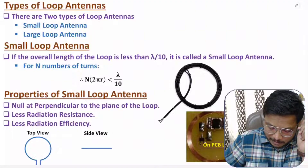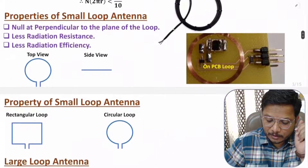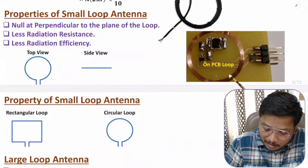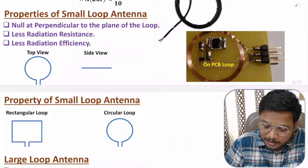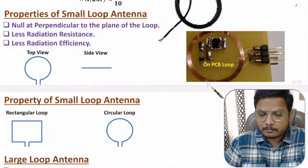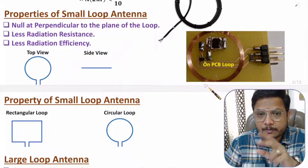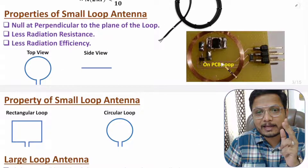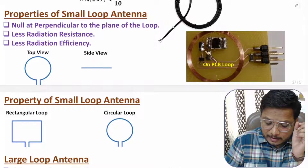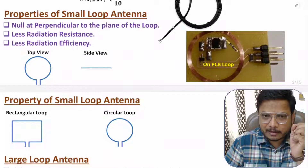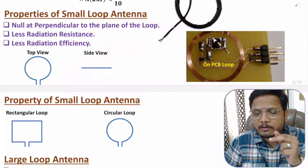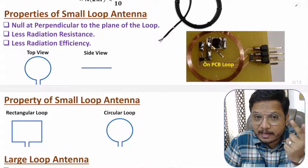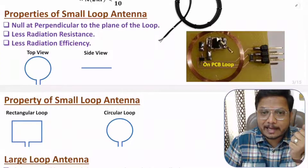Here you can observe on a PCB there is a loop with multiple rounds — a practical application of a small loop antenna. With this particular PCB, the length of the loop antenna is lambda by phi, so this is a small loop antenna. This type of small loop antenna is used for high-frequency communication like NFC and RFID.